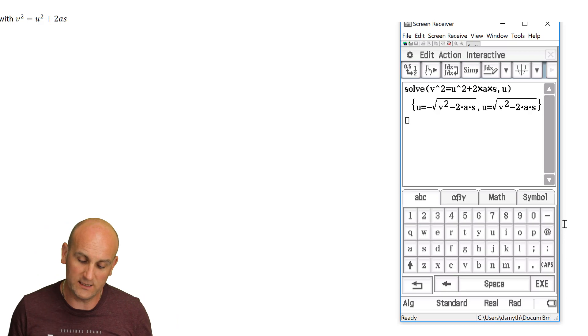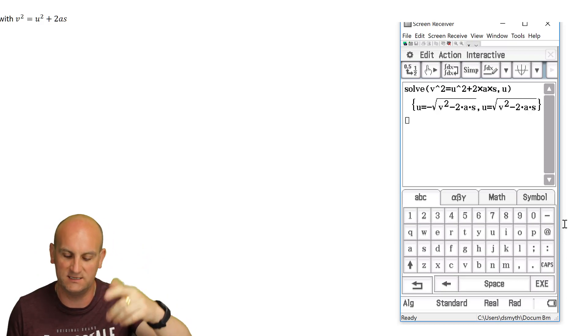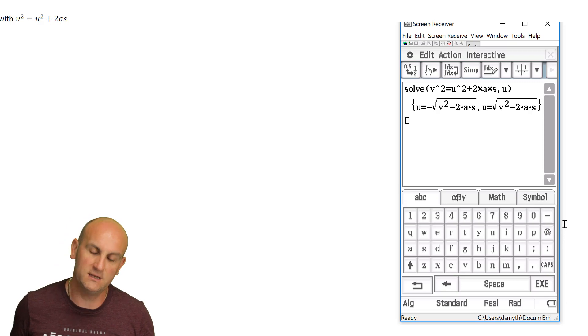You've come up with two values. Now looking at that, it looks weird, doesn't it? But all it's got is my plus and my minus value. And it's got the U is equal to the negative of V squared minus two AS or U is equal to the positive of V squared minus two AS and life is good.